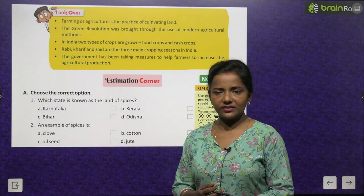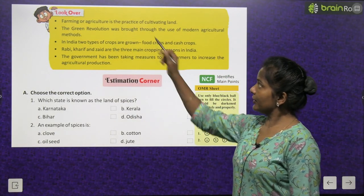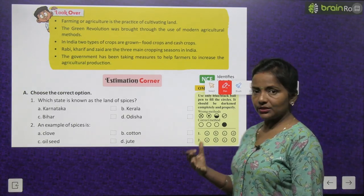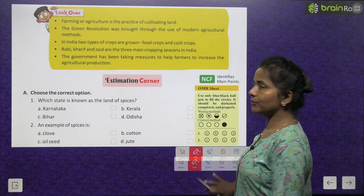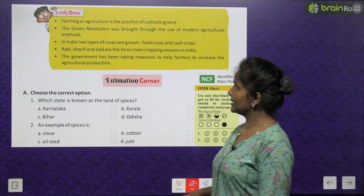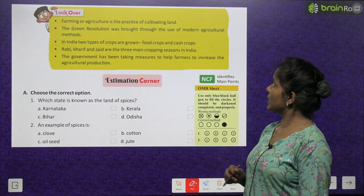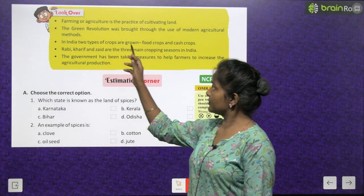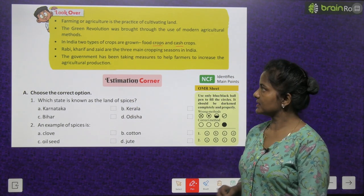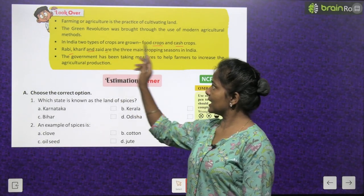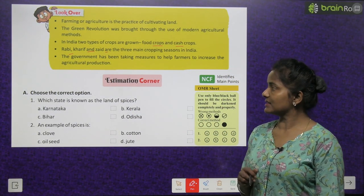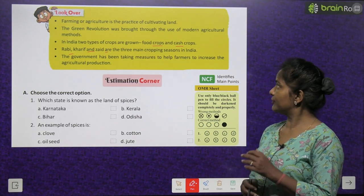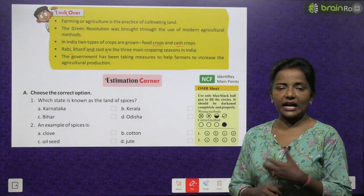Chapter summary: Farming or agriculture is the practice of cultivating land. The Green Revolution was brought through the use of modern agricultural methods. Two types of crops are grown in India — food crops and cash crops. Rabi, Kharif and Zaid are the three main cropping seasons. The government has been taking measures to help farmers increase agricultural production.